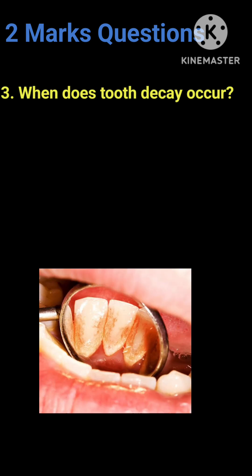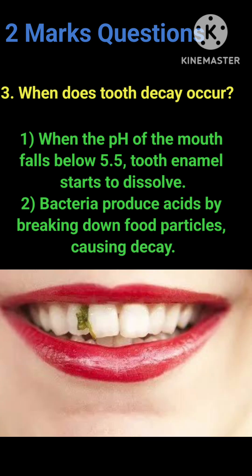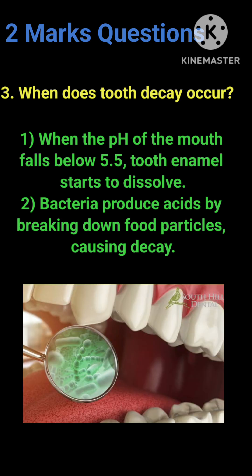The reaction forms toxic metal salts, making the food unsafe to consume. Question 3: When does tooth decay occur? Answer: When the pH of the mouth falls below 5.5, tooth enamel starts to dissolve. Bacteria produce acids by breaking down food particles, causing decay.